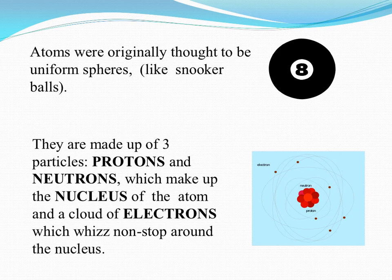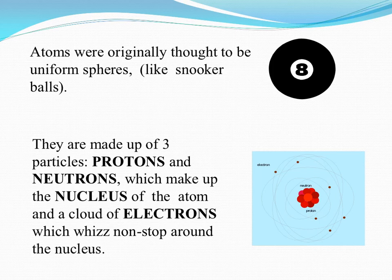The idea of atoms has been around since ancient Greek times when philosophers such as Democritus came up with the idea there must be some stage where you get to a particle so small it becomes indivisible. And in fact the word atom is derived from the Greek word for indivisible. It wasn't until the late 19th century and the early 20th century that experiments were done that enabled us to find out that protons and neutrons make up the nucleus of an atom and there is a cloud of electrons that whiz non-stop around that nucleus.